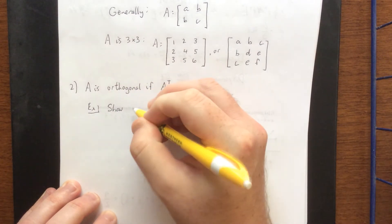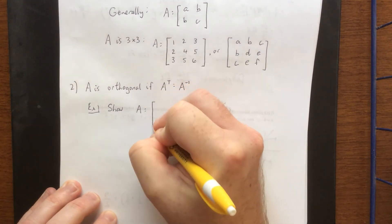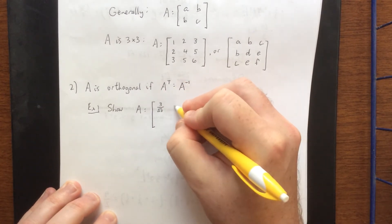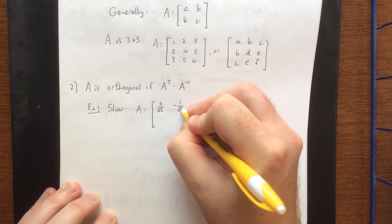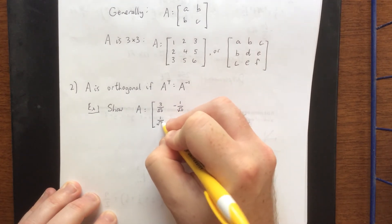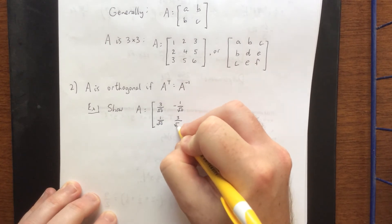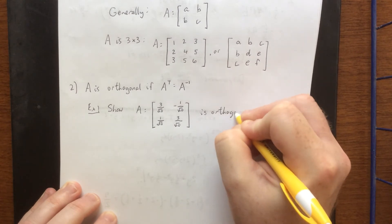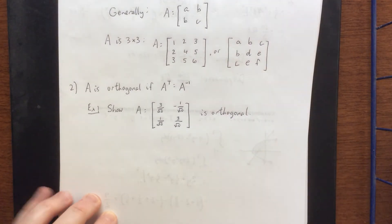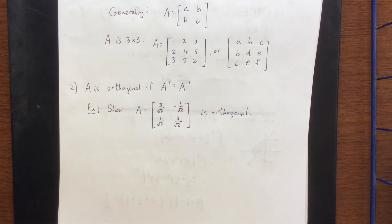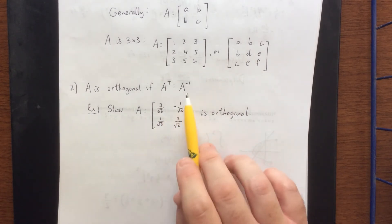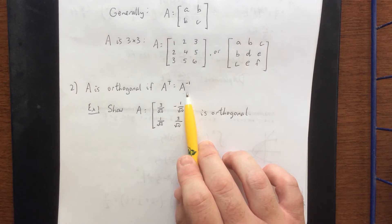So as an example, I would like to show that the matrix A will make it a 2 by 2 matrix. We'll do 3 over the square root of 10, negative 1 over the square root of 10, positive 1 over the square root of 10, and 3 over the square root of 10. I'd like to show that this matrix is orthogonal.